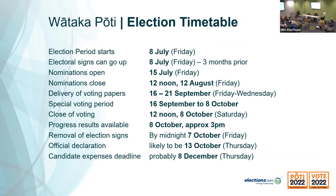These are the key dates. Tomorrow is the start of the three-month election period when we have to record the campaign expenditure, and when signs can go up. There's a current issue — the elephant in the room — Mr. Eagle is giving me a hard time at the moment about Wellington's hoarding policy, which says the 27th of August is when signs can go up, but he's got a big electronic billboard up.